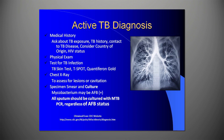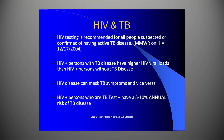Ideally, treatment begins after a TB test signals exposure but before active disease has developed. People with HIV-AIDS are particularly vulnerable to TB disease. Therefore, HIV testing is recommended for all people suspected or confirmed of having active TB disease. HIV-positive people with TB have higher HIV viral loads than those without TB disease. It's also important to realize that HIV disease can mask TB symptoms and vice versa. HIV-positive individuals who test positive for TB have a 5 to 10 percent annual risk of TB disease.